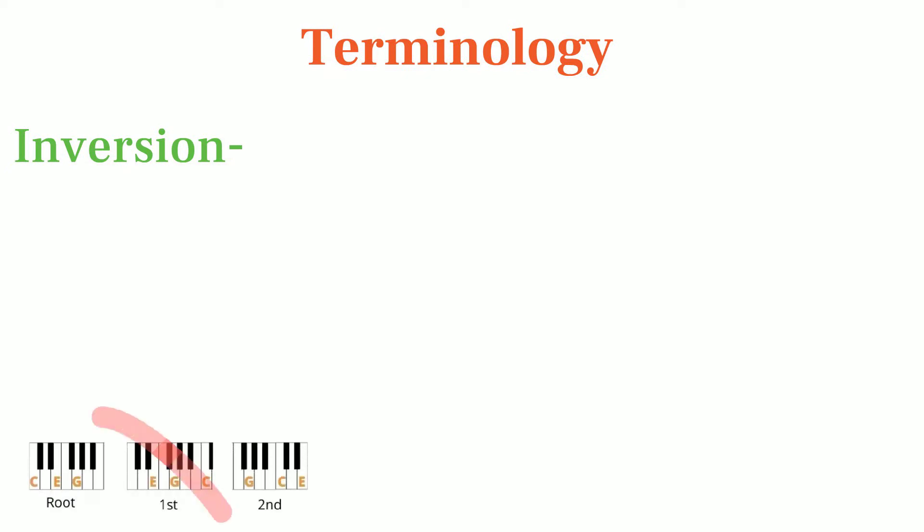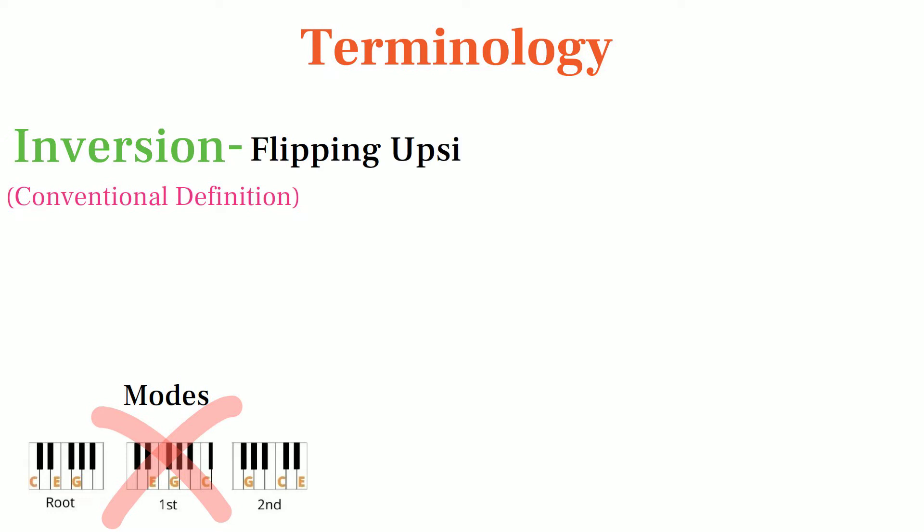The first thing to address is terminology. By saying inversion, we're not referring to something like first and second position of the major triad. Those are modes. Instead, our definition of inversion relates to its meaning in conventional language, which basically means flipping.